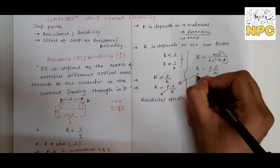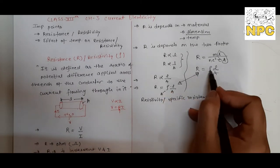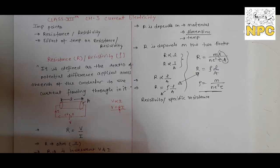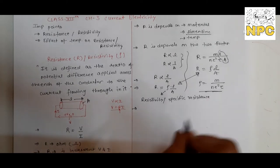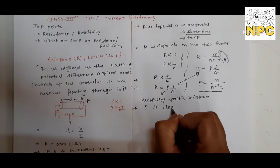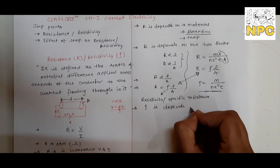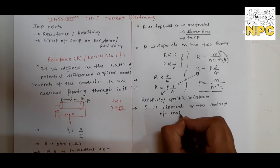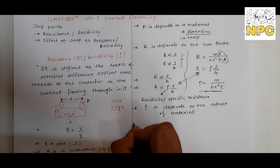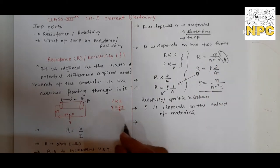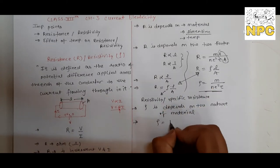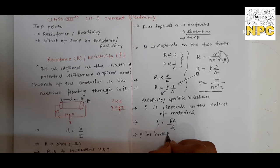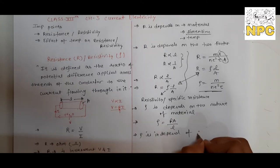If you compare, R equals rho times L by A, so rho equals RA by L. This is a very important equation because from here you can see that rho depends on the nature of the material. The value of rho does not depend on L and A — rho is independent of L and A.